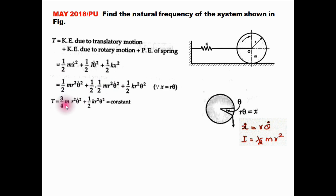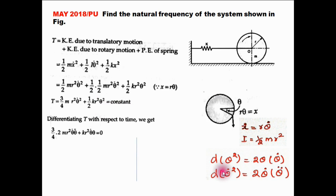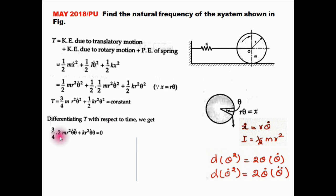1/2 plus 1/4 is 3/4. This is the total energy of the system. As per the energy method, the total energy is constant. Now differentiating with respect to time, using the chain rule — differentiating theta² gives 2·theta·theta_dot, and differentiating theta_dot² gives 2·theta_dot·theta_double_dot — and reducing, cancelling 2 and 4, we get 3/2·m·r²·theta_double_dot plus k·r²·theta equals zero.